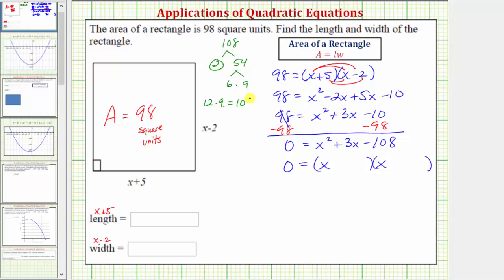So 12 times nine equals 108, and we're looking for the factors of negative 108 that add to positive 3. We'll use the factor of positive 12 and negative 9. Positive 12 times negative 9 equals negative 108, and positive 12 plus negative 9 does equal positive 3.